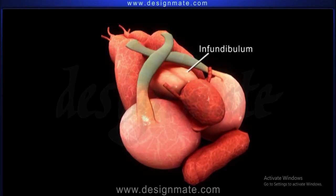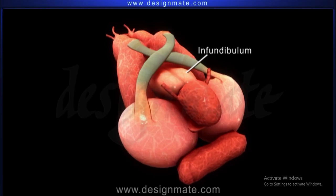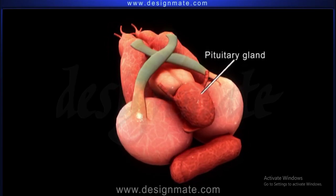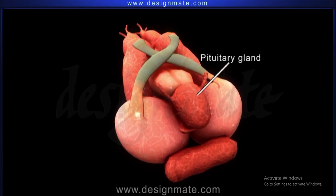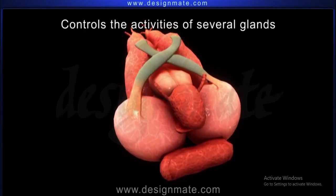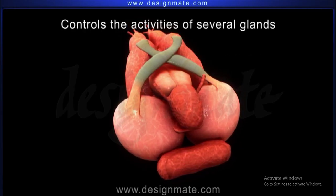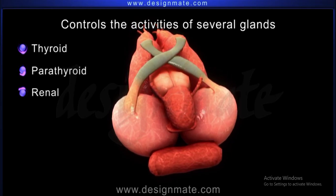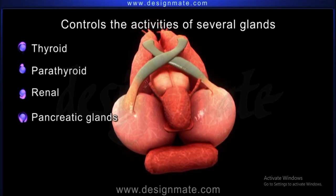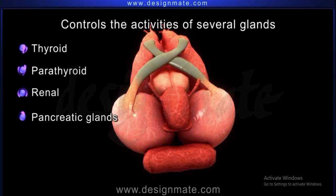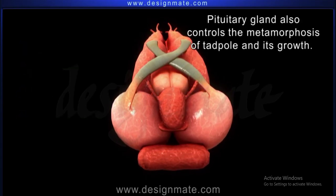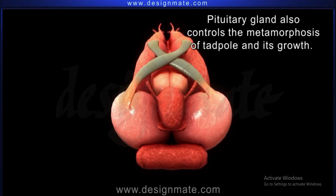The posterior, broader end of the infundibulum is attached to a hemispherical endocrine gland called the pituitary gland. The pituitary gland controls the activities of several glands like thyroid, parathyroid, renal and pancreatic glands. The pituitary gland also controls the metamorphosis of tadpole and its growth.